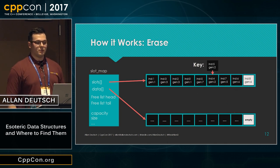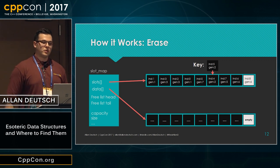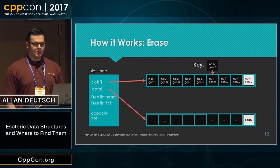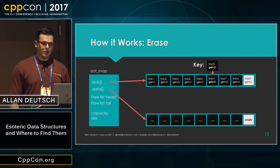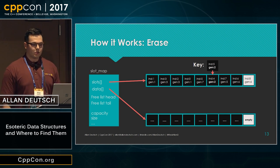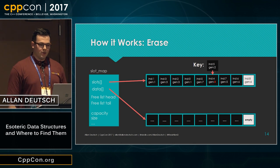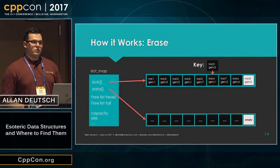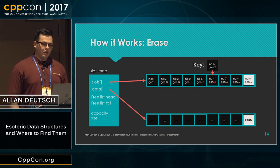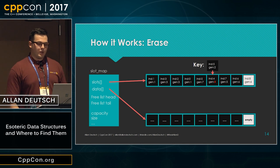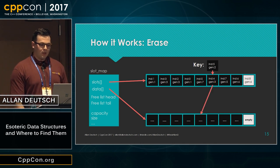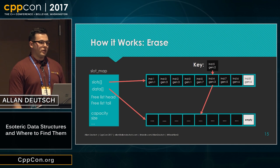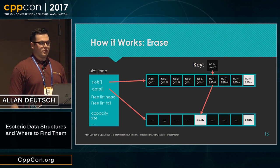To erase something, you give a key to the slot map — it'll have an index and a generation. The first thing we do is check the generation. If the generations match, we can proceed. We increment the generation to make sure we don't have ABA issues going forward right off the bat. Then we can find the element it's pointing to and go ahead and destruct it.